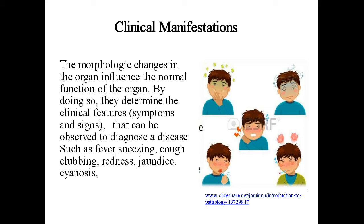Morphological changes in the organ influence its normal function, thereby determining the clinical features, symptoms, and signs used to diagnose a disease. Clinical manifestations and symptoms include fever, sneezing, cough, clubbing, redness, jaundice, and cyanosis — bluish skin caused by deoxygenated blood. When red blood cells lack oxygen, they do not produce the red color of oxygenated blood, resulting in blue skin.